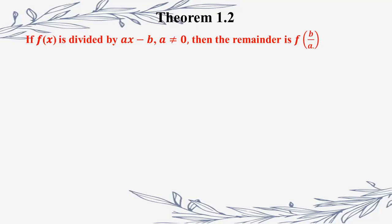We all know the Remainder Theorem. If a polynomial is divided by a divisor of the form (ax minus b), we can find the remainder. If the polynomial is divided by (ax minus b), similarly when x minus k is divided, we apply the theorem for divisors of the form (ax minus b).